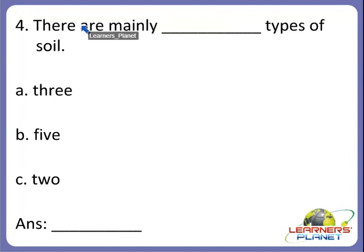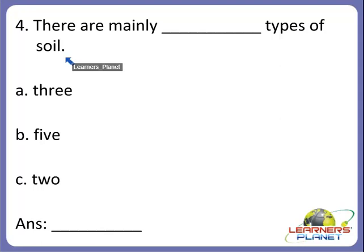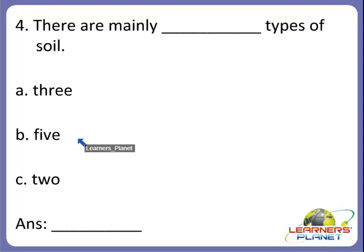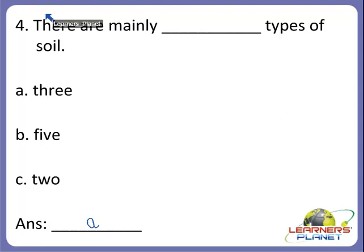Now the next one: there are mainly dash types of soil. How many types of soil are there? Are they divided into A. 3, B. 5, or C. 2? Yes, very good — there are mainly three types of soil. Can you name them? They are sand, gravel, and clay.